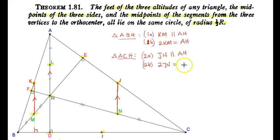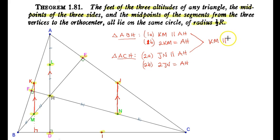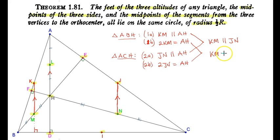Combining results 1A and 2A: KM is parallel to AH, which is parallel to JN, so KM is parallel to JN. Using relations 1B and 2B, KM and JN also have equal length.